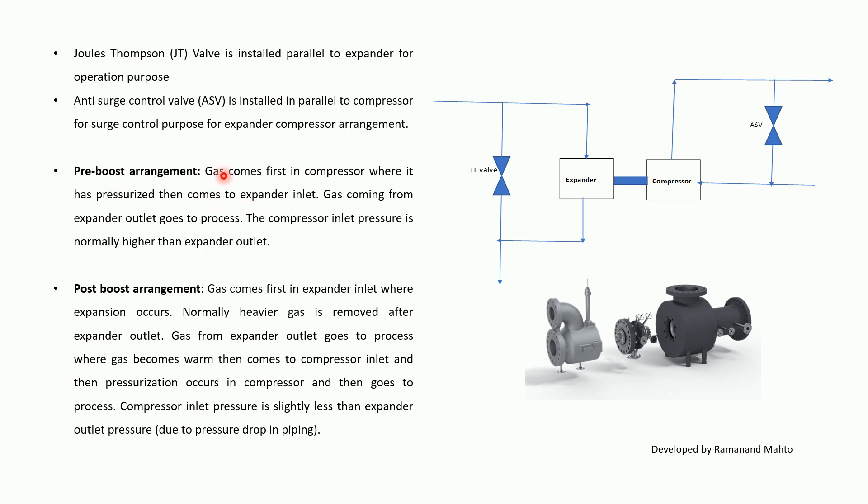There are two arrangements: Pre-Boost and Post-Boost. In the Pre-Boost arrangement, gas comes first into the Compressor where it is pressurized, and then comes to the Expander Inlet. Gas from the Expander Outlet goes to the process, and the Compressor Inlet pressure is normally higher than the Expander Outlet pressure.